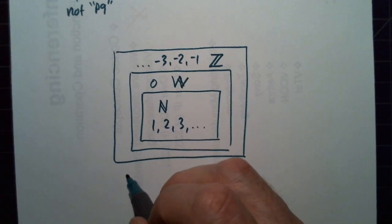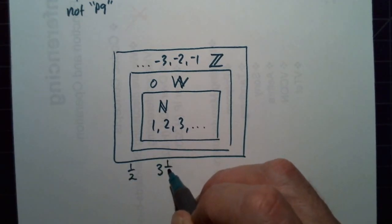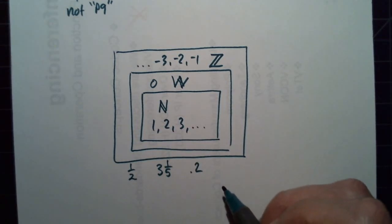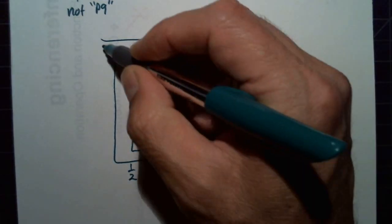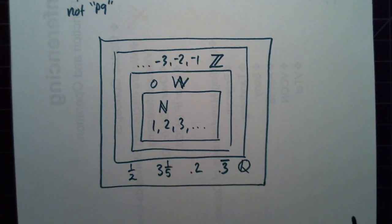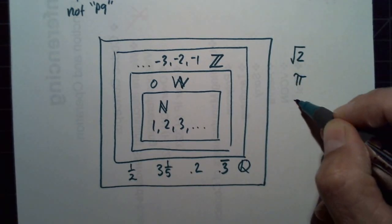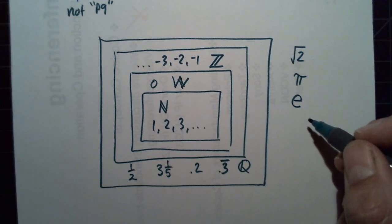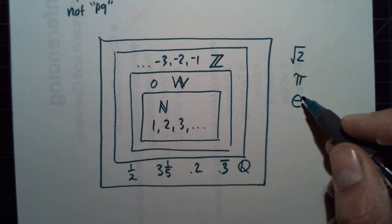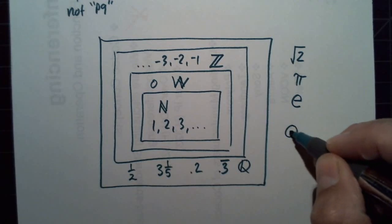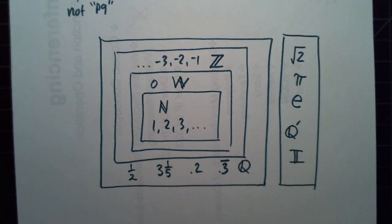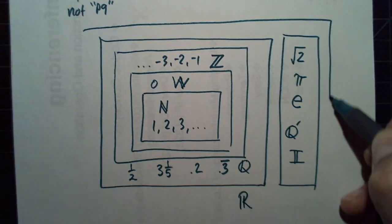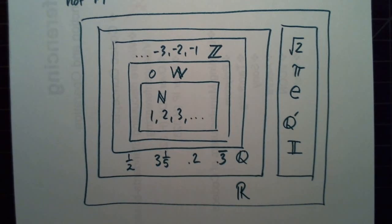If we include fractions, terminating decimals, and repeating decimals, these are called the rational numbers. Then we have irrational numbers — pi, e — these are numbers that have decimals that don't repeat and don't end, so these are called irrational. And if we include all of these together, those are the real numbers.